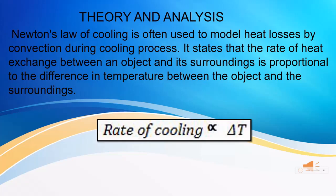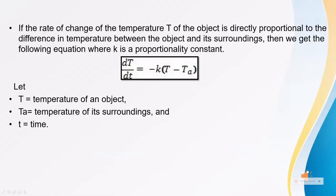Newton's Law of Cooling is often used to model heat loss by convection during the cooling process. It states that the rate of heat exchange between an object and its surrounding is proportional to the difference in temperature between the object and the surrounding. The rate of cooling describes how the rate of change of temperature of the object is directly proportional to the difference in temperature between the object and its surrounding, where T is the temperature of the object, Ta is the temperature of the surrounding, and t equals time.